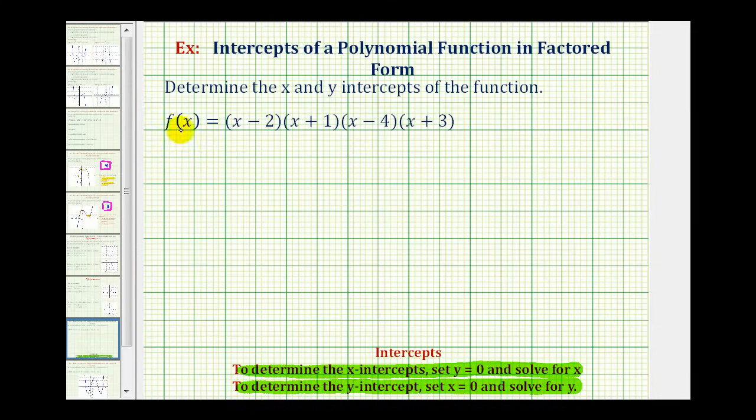And remember, in function notation, f(x) is equal to y. So let's start by finding the x intercepts of our function, which means we'll set y equal to zero, or in this case, f(x) equal to zero and solve for x.